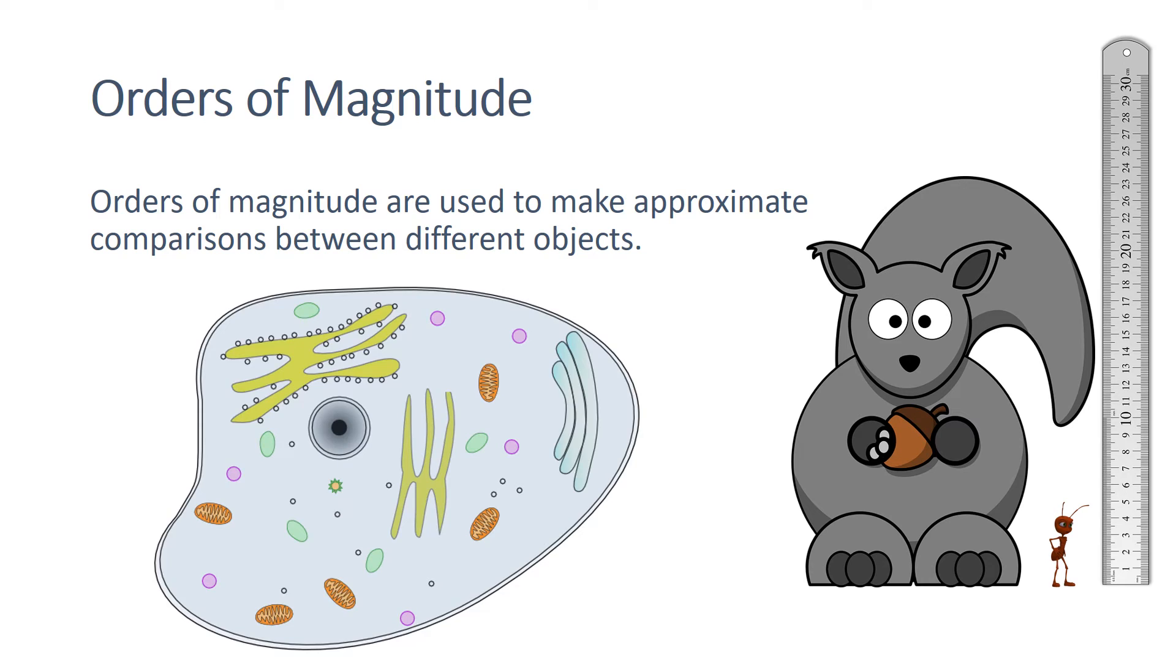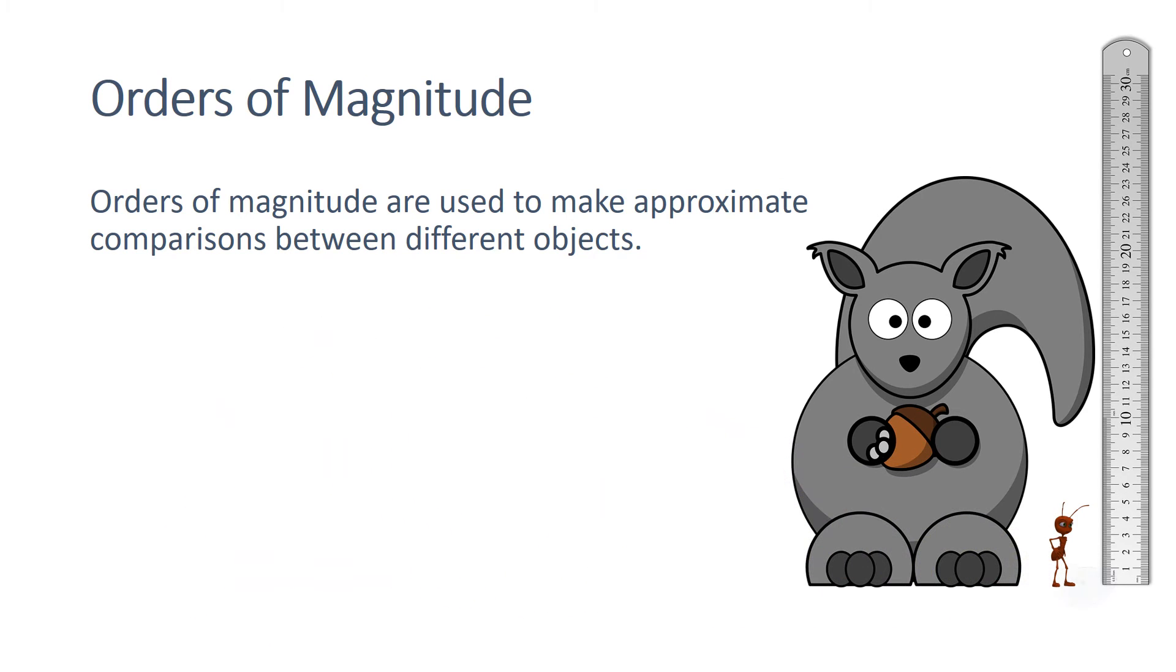When we look at cells, it's easy to forget just how small they are and also how some cells are much larger than others. It's also important that we can convert between different units.